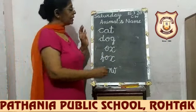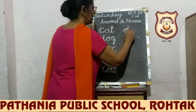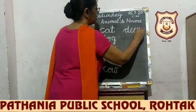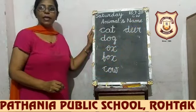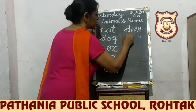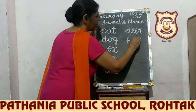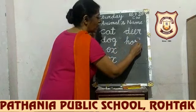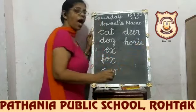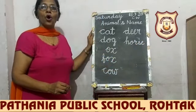Next is deer. Deer — D, double E, R. Deer. Next is horse. Horse — H, O, R, S, E. Horse.